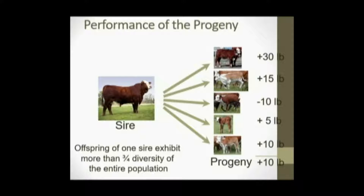An EPD, or expected progeny difference, is really a numerical or quantitative representation of the genetic merit of an individual as a parent for a given trait. In this example, we have five offspring from a sire, all coming from different contemporary groups. A contemporary group is really a combination of a herd, a season, and a year of birth of the calf. So the first calf with a plus 30 was 30 pounds heavier at weaning than the average of his contemporaries, while another calf was actually 10 pounds lighter. If we take an average of these contemporary group deviations, we wind up with a plus 10, which you can conceptualize as on average how much heavier this sire's offspring would be compared to their contemporaries.